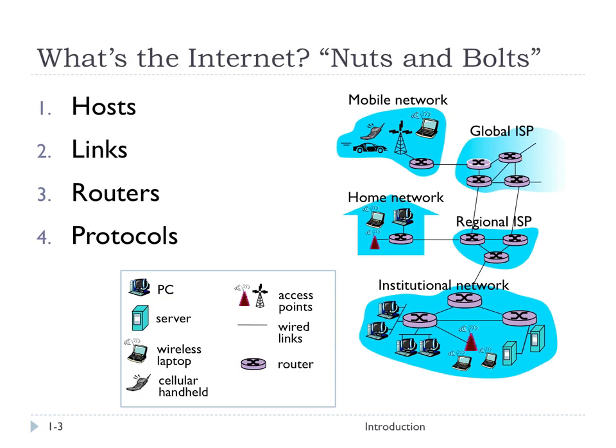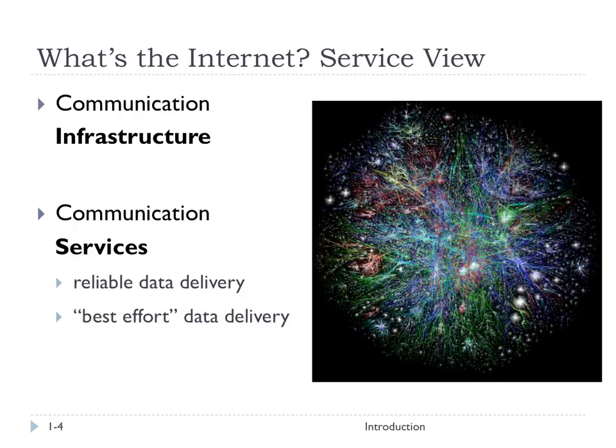So those are four components of the internet from a nuts and bolts perspective. The authors of the book, Kouros and Ross, also explain the internet in terms of service — that the internet provides a communication infrastructure. This enables distributed applications like the web, voice over IP, games, email, and file sharing.